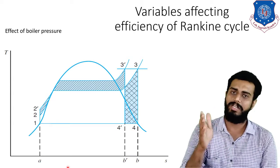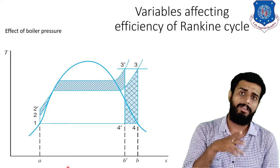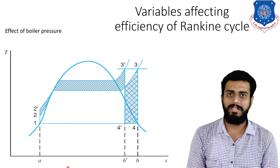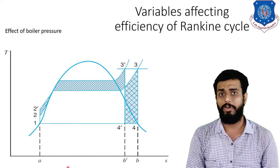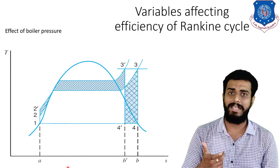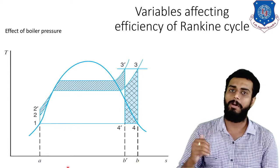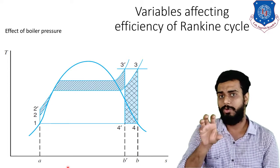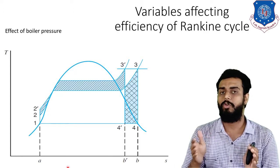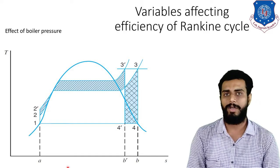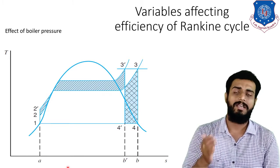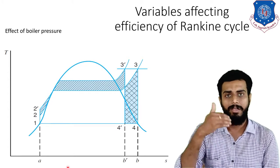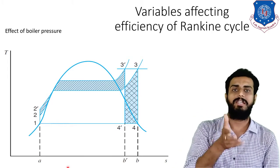To summarize: if you increase the boiler pressure, decrease the condenser pressure, or superheat the steam, the efficiency of the Rankine cycle will increase. However, in a real-life power plant, using any single factor to increase efficiency will not be noticeable compared to the investment made. In real life, if you want to increase efficiency significantly, one should go for a combination of these effects — not only a single effect — which is why we discuss reheat, regenerative, and other combined cycles.